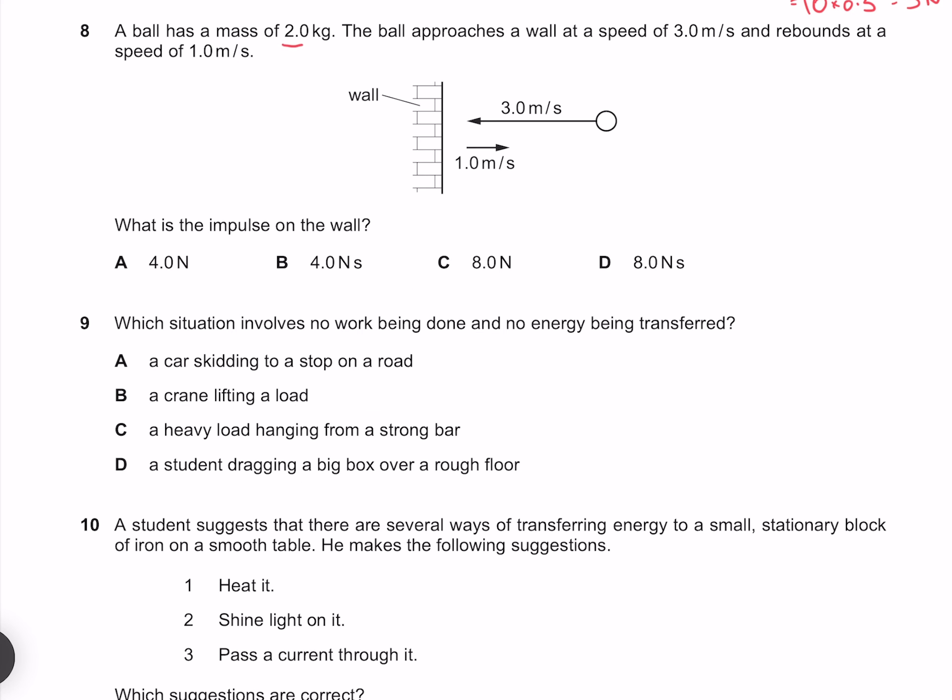A ball has a mass of 2 kilograms. The ball approaches a wall at a speed of 3 meters per second and rebounds at a speed of 1 meters per second. What is the impulse on the wall? Our impulse is going to be equal to our final momentum minus our initial momentum. Our final momentum is our mass of 2 multiplied by our final velocity of 1. Subtracting our initial momentum, which is our mass of 2 multiplied by our initial velocity, which because it's in the opposite direction to our final, we must make negative, which gives me 8 newton seconds, which means our answer is D.